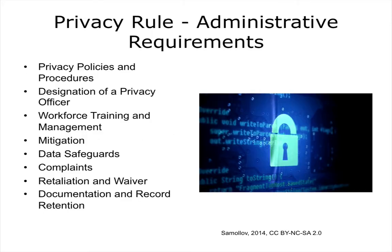When we talk about the Privacy Rule and the Security Rule specifically, under the Privacy Rule we have quite a few administrative requirements, policies, and procedures. How do you protect privacy and what do you do if there is a problem related to privacy for a particular patient? Each covered entity has to designate a privacy officer — a single point of contact who has responsibility for privacy in that organization. It does not have to be a full-time position; however, there has to be one person who understands they are the privacy officer and responsible for ensuring compliance with the HIPAA Privacy Act.